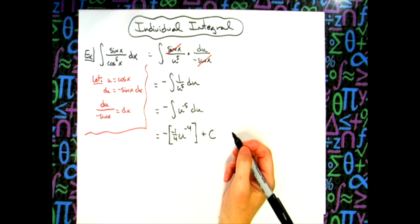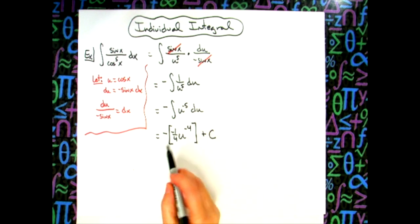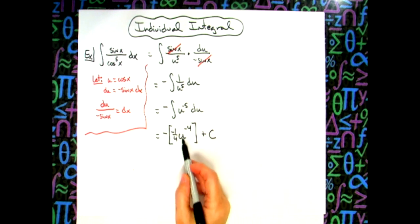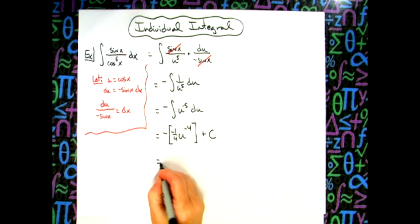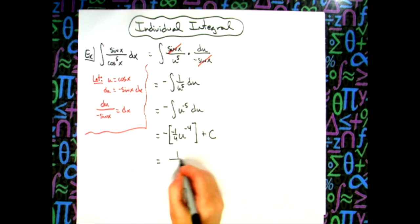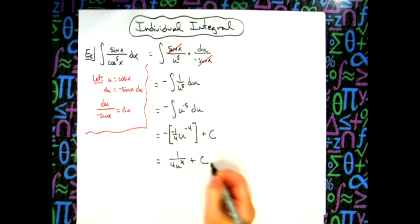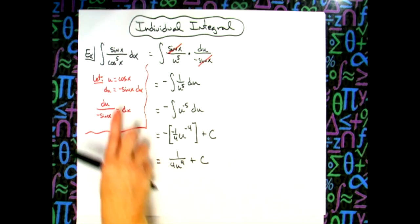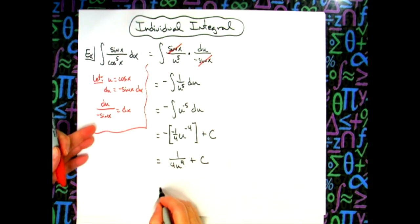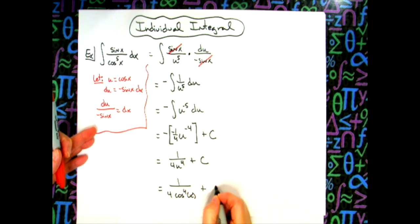Cleaning this up a little bit, negative times negative will be positive and this u to the negative four can be brought down to the bottom. So we'll have positive one over four u to the fourth plus c. Our last step would be taking u and plugging it back in. So we'll have one over four cosine x to the fourth power and then plus c.